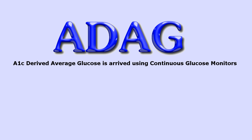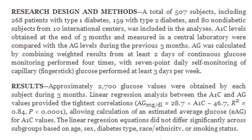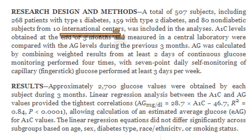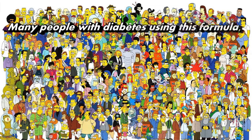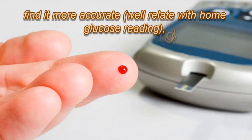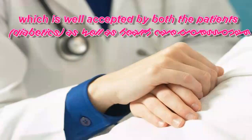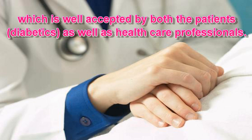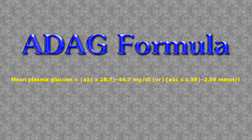ADAG — A1C-Derived Average Glucose — is arrived at using continuous glucose monitors. This formula provides the relationship between A1C and blood glucose testing results. This study takes into account type 1, type 2, and non-diabetic individuals, as well as studies carried out in different locations. Many people with diabetes use this formula and find it more accurate and better related to home glucose readings, and it is well accepted by both patients and healthcare professionals. Mean plasma glucose = (A1C × 28.7) − 46.7 mg/dL, or (A1C × 1.59) − 2.59 mmol/L.